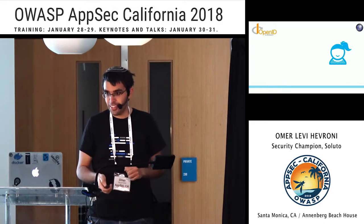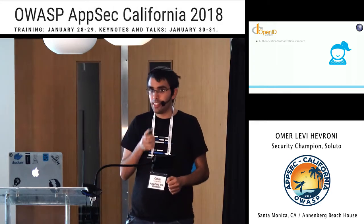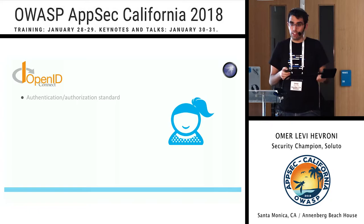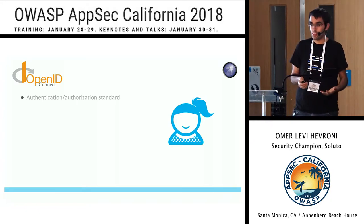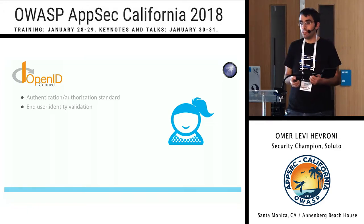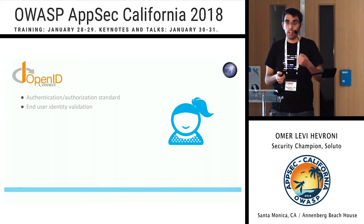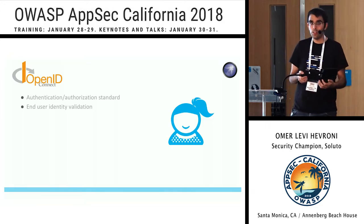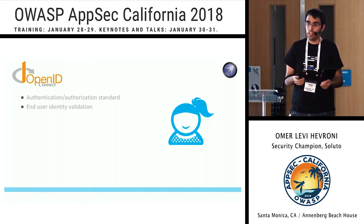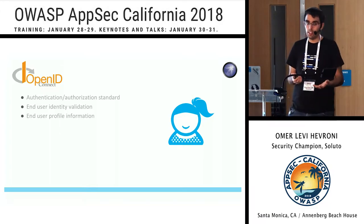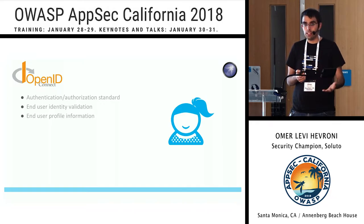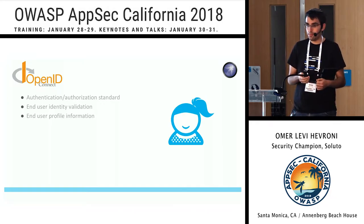OpenID is a protocol used for authentication or authorization. OpenID aims to give two things: first, a way to validate the end user identity - what we call authentication. Second, it gives us profile information about the user, which we can use for authorization.